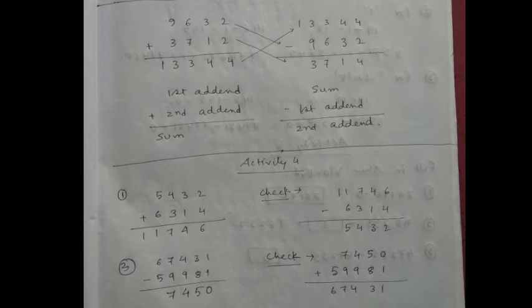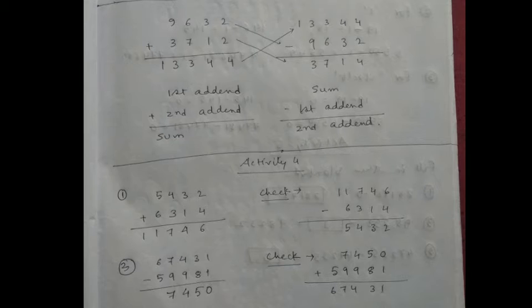Now for checking addition: sum minus first addend equals the second addend. So 13,344 minus 9,632 equals 3,712, which is the same as the second addend. This is the answer checking for addition.